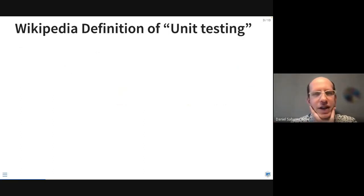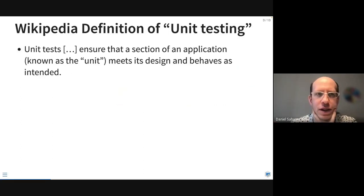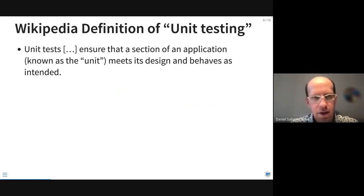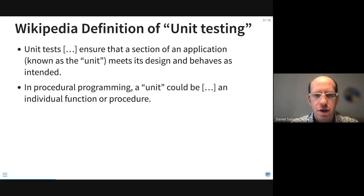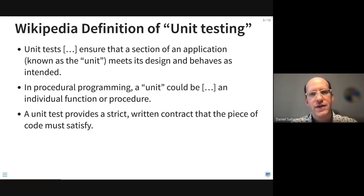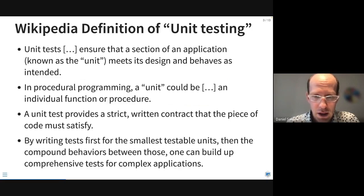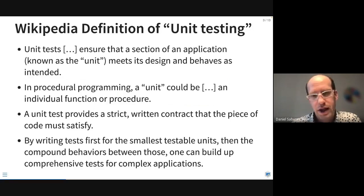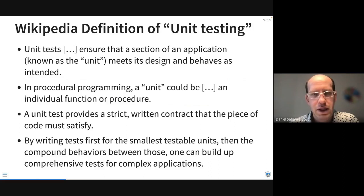What does unit testing actually mean? Here's the Wikipedia definition: unit tests ensure that a section of an application — basically the unit — meets its design and behaves as intended. A unit is typically a function or a procedure. The unit test provides a strict written contract that the piece of code must satisfy, and by writing tests first for the smallest units and then for compound behaviors between units, we can build up comprehensive tests for complex applications.